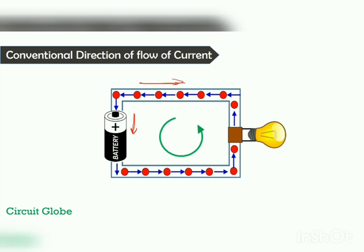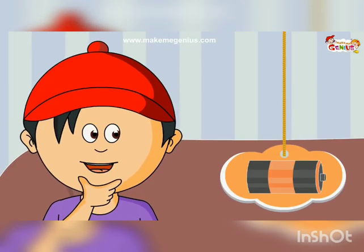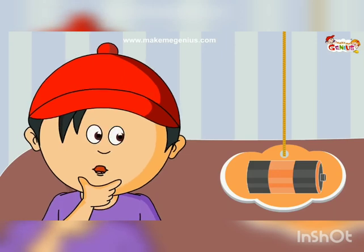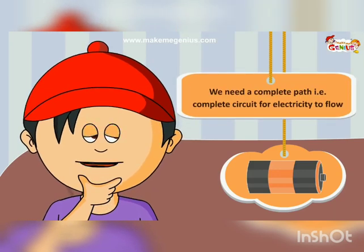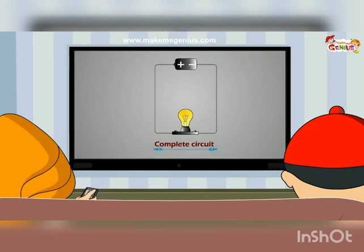This direction of current is used for designing the circuit. You need some power source like a cell or a battery, and you need a complete circuit for electric charge to flow.